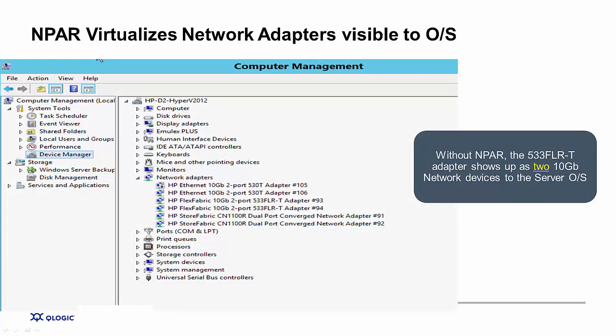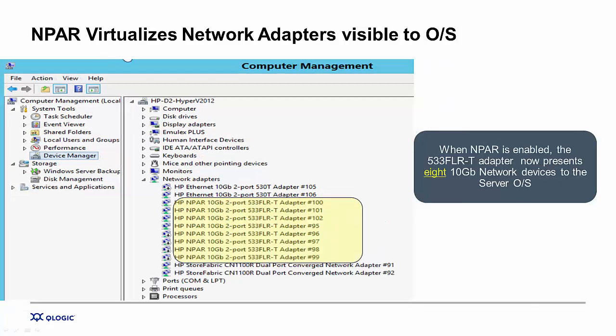Here's a view from the server management console. We're looking at Device Manager in a Windows-based server where we can see several network adapters. Focusing on the 533 FLRT for this example: normally it presents as just two adapters, with no quality-of-service benefits — you're at the mercy of the hypervisor for how data flows to those physical connections. With N-PAR enabled, the 533 FLRT now presents itself as eight adapters to the operating system. Each adapter can be set in terms of bandwidth performance in 100 megabit increments, carving up to 10 Gbps on each of the two ports, allowing you to dedicate a specific adapter for a specific mission-critical workload and guarantee the level of performance.